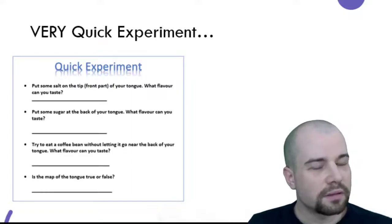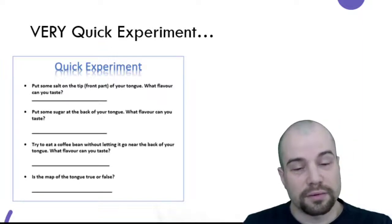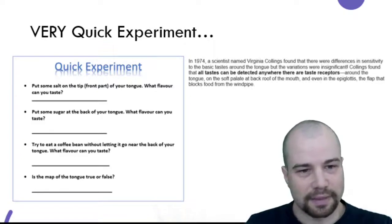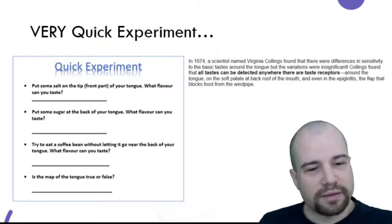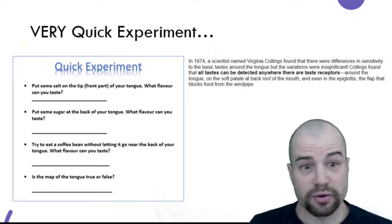I also suggested a coffee bean but not many people had them. You then saw that the map of the tongue was clearly wrong. We also read this little bit of information about the scientist who proved it was wrong.